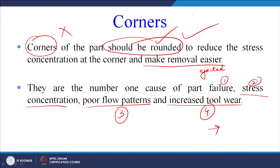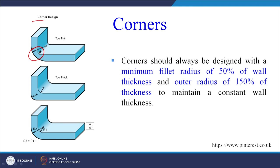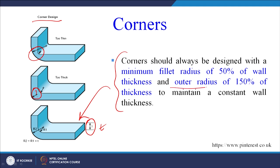These problems can easily be avoided by giving a radius at the corner. Corners should always be designed with a minimum fillet radius of 50% of the wall thickness. If the wall thickness is t, the fillet radius must be at least 0.5t, and the outer radius must be 150% of the thickness, to maintain a constant wall thickness along that direction.